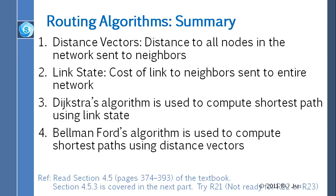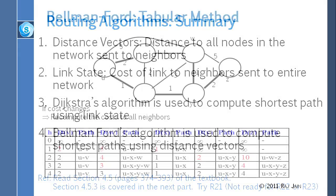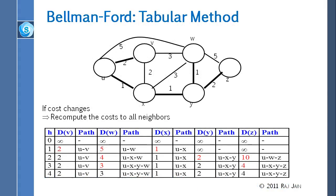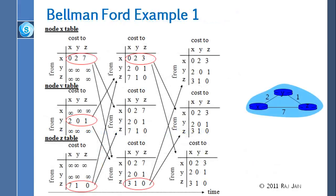Student question: in Bellman-Ford, does each node know the full path to a destination? You do know the whole path from the calculation, but in practice only the next hop is stored in the routing table — similar to the routing tables seen in other exercises. You don't store the whole path, but the calculation gives it to you.